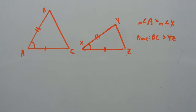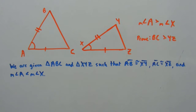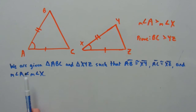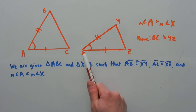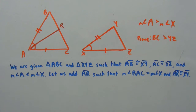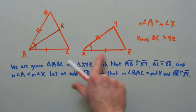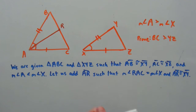Let's start with what we're given. We're given triangle ABC and triangle XYZ such that segment AB is congruent to segment XY, and segment AC is congruent to segment XZ. Also note that the measure of angle A is greater than the measure of angle X. Now let's add a segment to our first triangle ABC — segment AR — such that it is congruent to XY and angle RAC equals the measure of angle X.